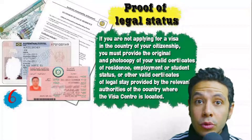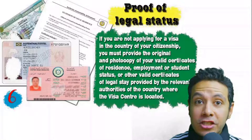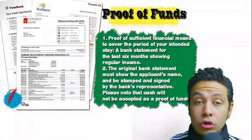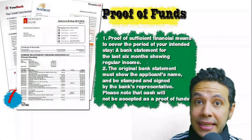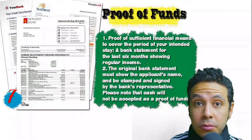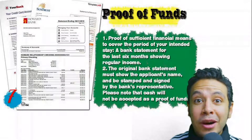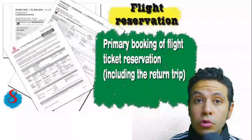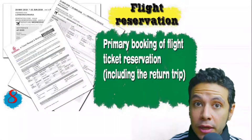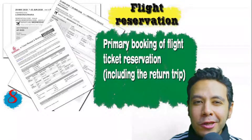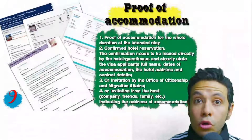In some cases you might be applying from a country different than your own. At that point you will need to provide proof of legal status — a certificate of legal residence in that country, and in some cases a valid residence visa for that country can also be accepted. You will also need to provide proof of sufficient funds, which is a bank statement showing your balance for at least six months. The original bank statement must show your name and be signed and stamped by the bank. Remember that cash will not be accepted as proof of funds. You should also provide a flight reservation — it could be an initial booking, but in some minor cases a confirmed booking is required — and it must include a return ticket.